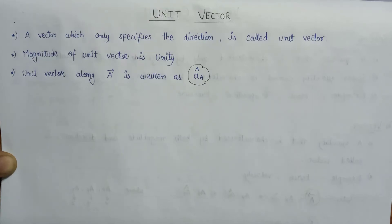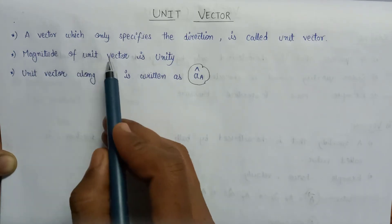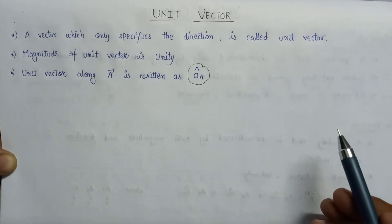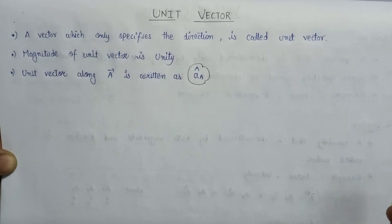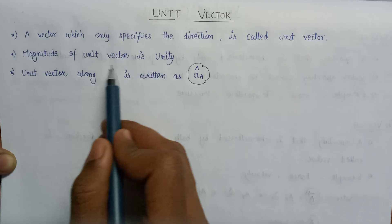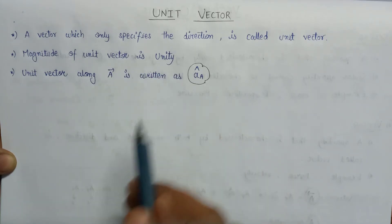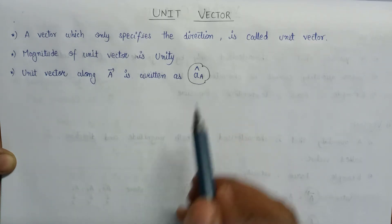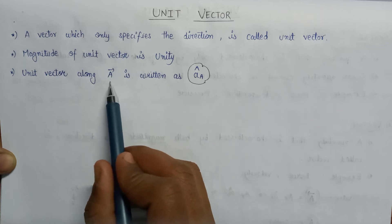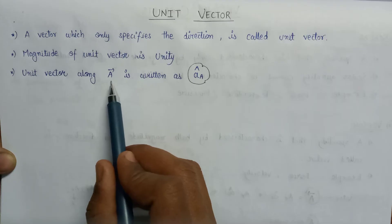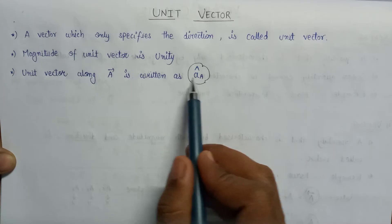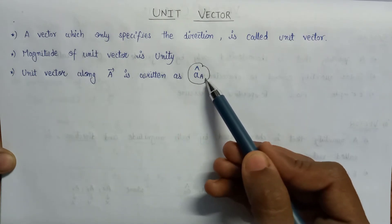Welcome all. In this lecture we are going to learn about unit vector. A vector which specifies the direction is known as unit vector, so it is a kind of vector which only specifies the direction of a particular vector quantity. The magnitude of a unit vector is equal to unity. The unit vector along the A vector is written as A-cap, and its representation is shown with a cap symbol over the letter.